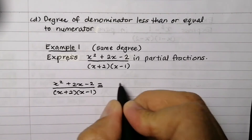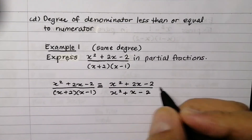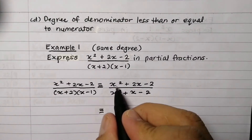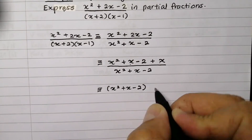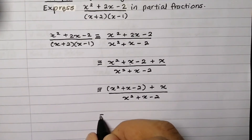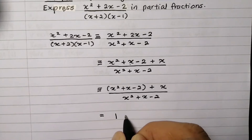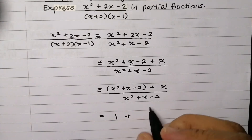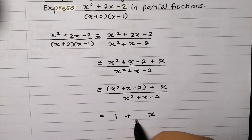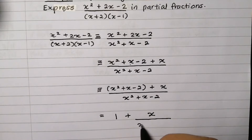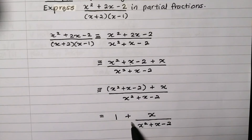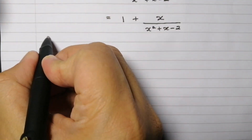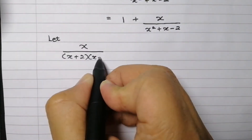Since the degree of the denominator is equal to the degree of the numerator, there is no need to use long division. We express the numerator in the same form as the denominator, with the rest as the remainder, then proceed. We get 1 plus a remainder of x, giving us x over (x² + x − 2). We then need to express this in partial fractions.